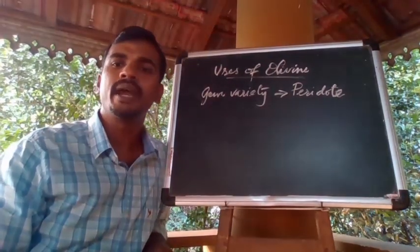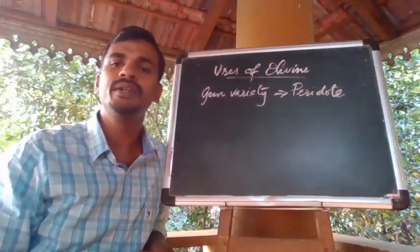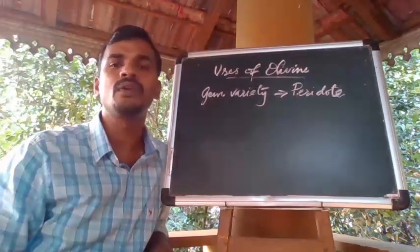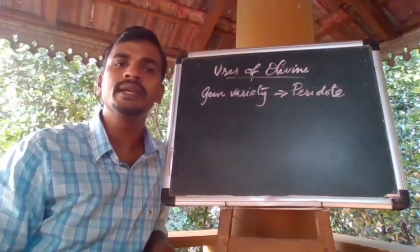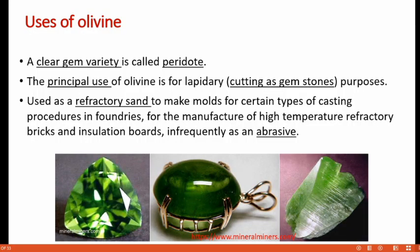Now let's discuss the uses of olivine. The main use is for lapidary purposes — olivine is used for cutting as gemstones, and the clear gem variety is called peridot. Olivine is also used as a refractory sand to make molds for certain types of casting in foundries, and for manufacturing high-temperature refractory bricks and insulation boards. It is sometimes also used as an abrasive.